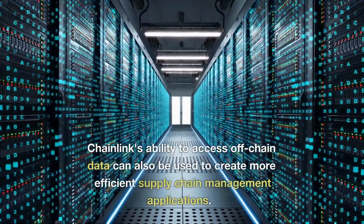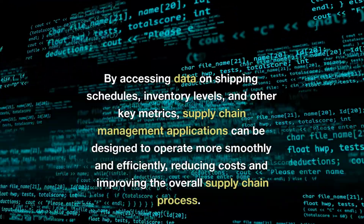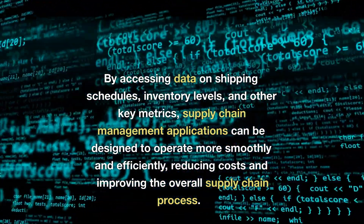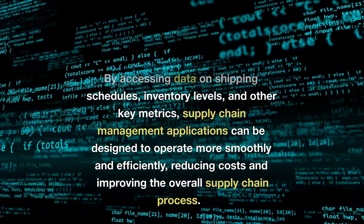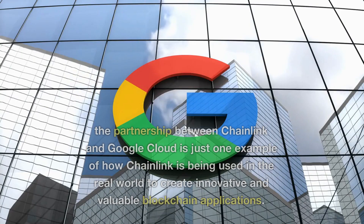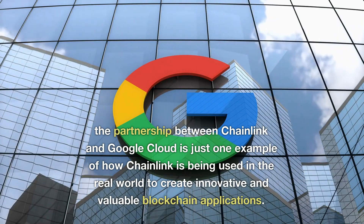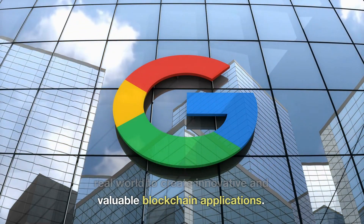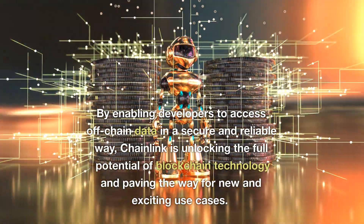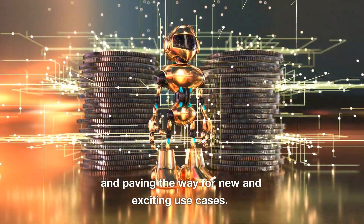Chainlink's ability to access off-chain data can also be used to create more efficient supply chain management applications. By accessing data on shipping schedules, inventory levels, and other key metrics, supply chain management applications can be designed to operate more smoothly and efficiently, reducing costs and improving the overall supply chain process. The partnership between Chainlink and Google Cloud is just one example of how Chainlink is being used in the real world to create innovative and valuable blockchain applications, unlocking the full potential of blockchain technology and paving the way for new and exciting use cases.